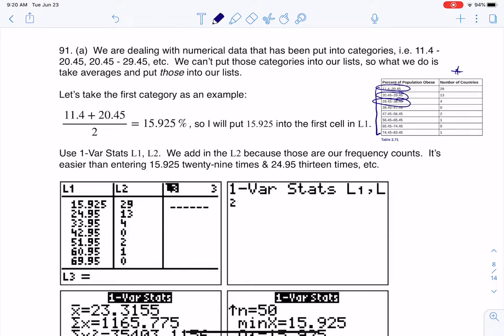where we have numerical data, but they're lumping them into groups, like age groups, or in this case, obesity groups. The problem is we can't put that kind of data into our lists. I can't put into L1 11.4 to 20.45, I can't put 20.45 to 29.45. The way our lists are created is we can only put in one number at a time, so what's typically done in stats is we'll take the midpoint here, or the average of these two numbers. So for example,